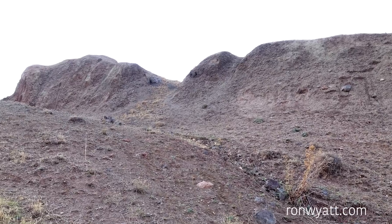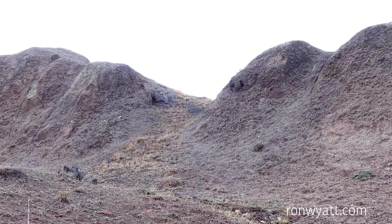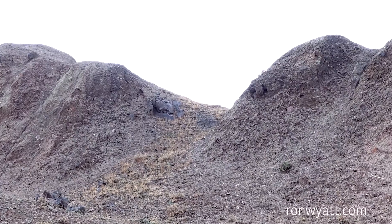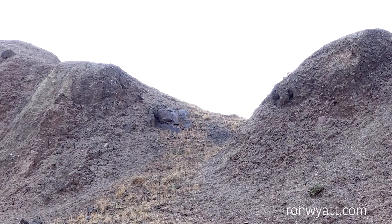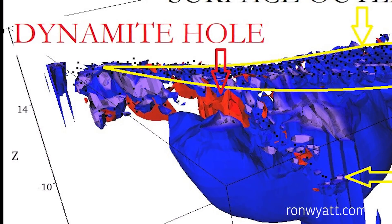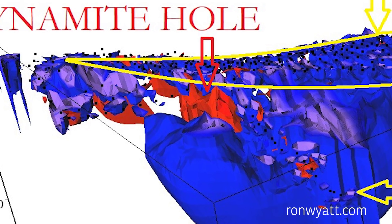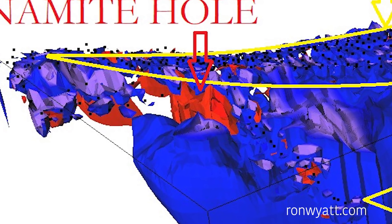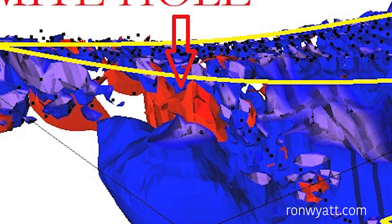One interesting feature which shows the difference between solid material versus areas where solid material has been fragmented can be seen in the location of the 1960 dynamite blast. This shows the location of the blast performed on the left side of the ship. The dynamite damage is visible because the material around the dynamite hole has fractured with the blast, and is absorbing more water than the surrounding material. This makes the area around the dynamite hole more conductive and shows up on the scans as the red color.